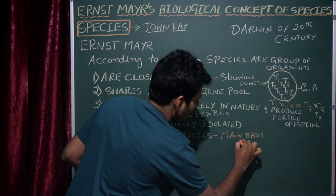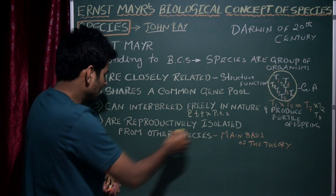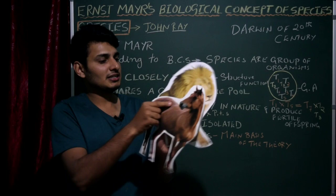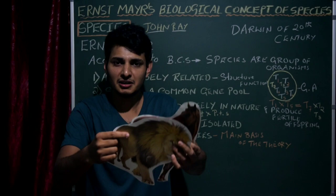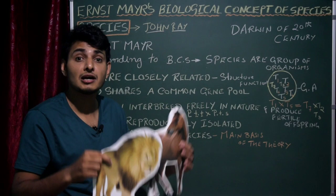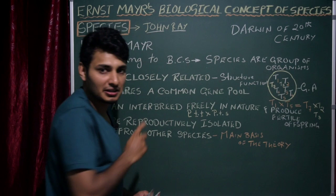The fourth theory — the main basis of the biological concept of species — states that species are reproductively isolated from other species. For example, a horse and a lion cannot mate and produce offspring. Two different species are reproductively separated; they cannot mate and produce offspring. This is the most important theory for NEET.